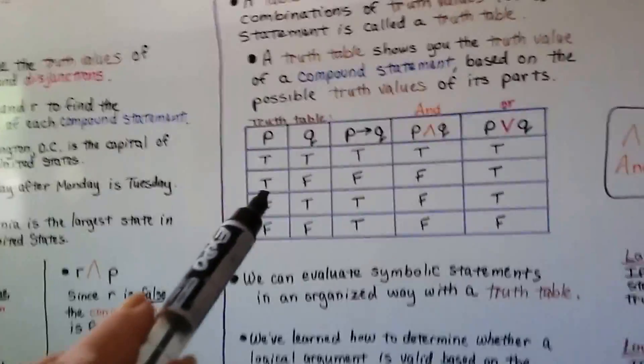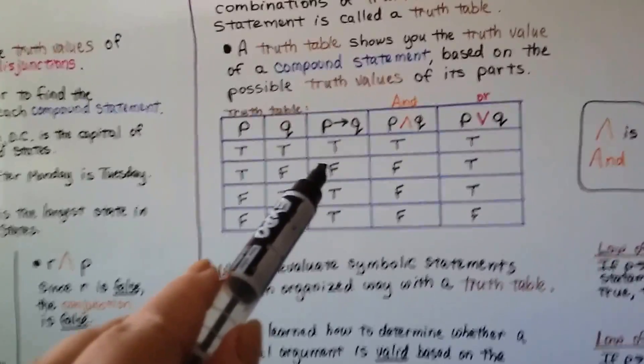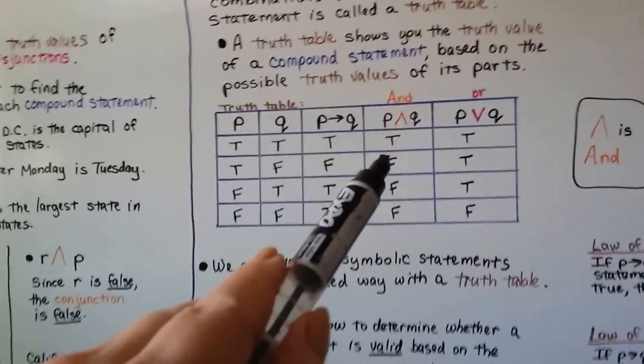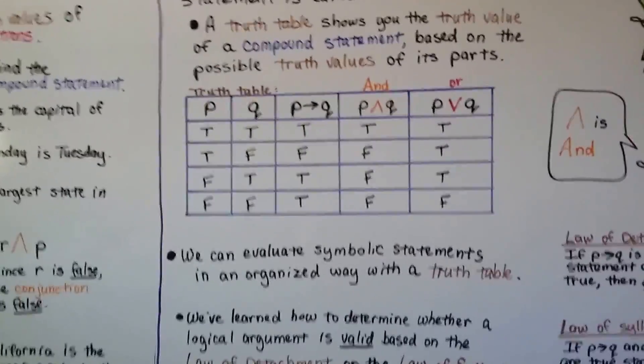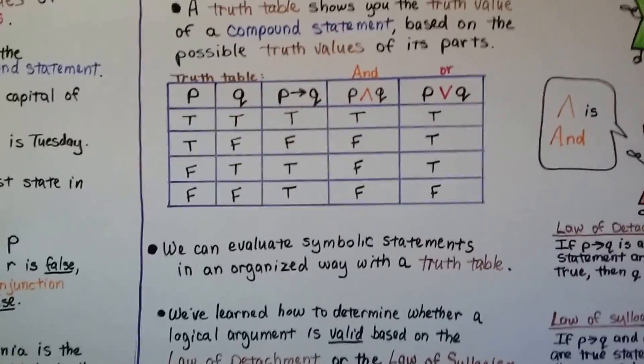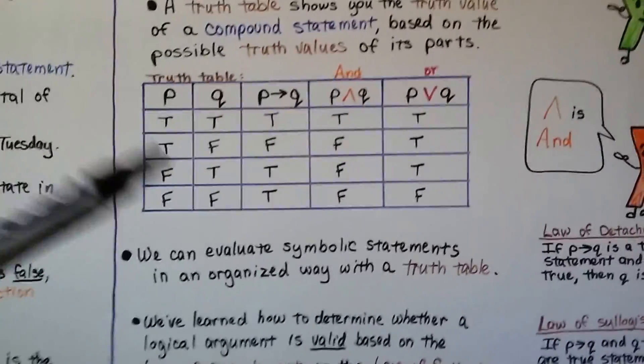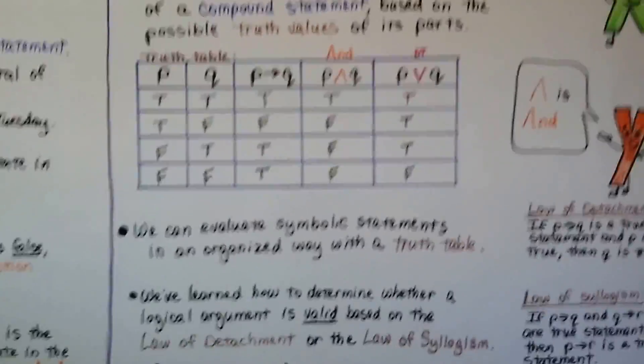But if we had a true and a false, then P therefore Q would be false, P and Q would be false, but P or Q would be true, because part of it would be true. So we can make these truth tables and put T or F for true and false in them.